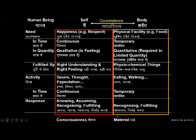We started with this familiar chart that we have all seen again and again in the five-day online workshop and face-to-face workshops. We were talking about how the self and the body — though we spoke of the needs, the fulfillment, the activity, the response in the workshops — we may have it as information. Now our task is to try and directly observe it within ourselves.